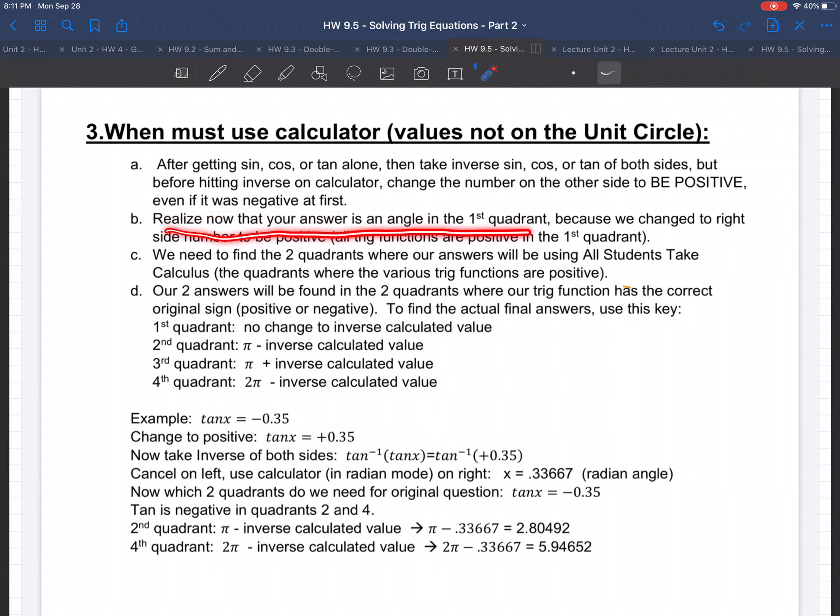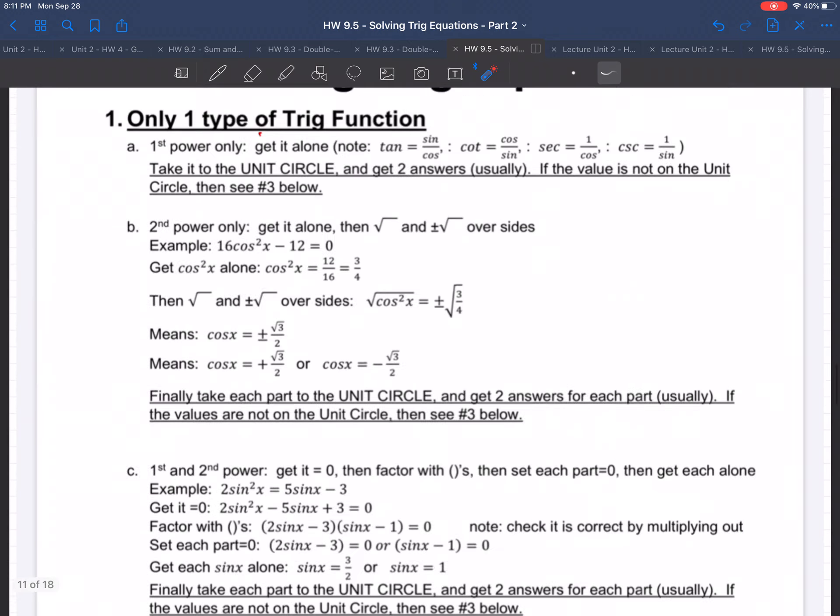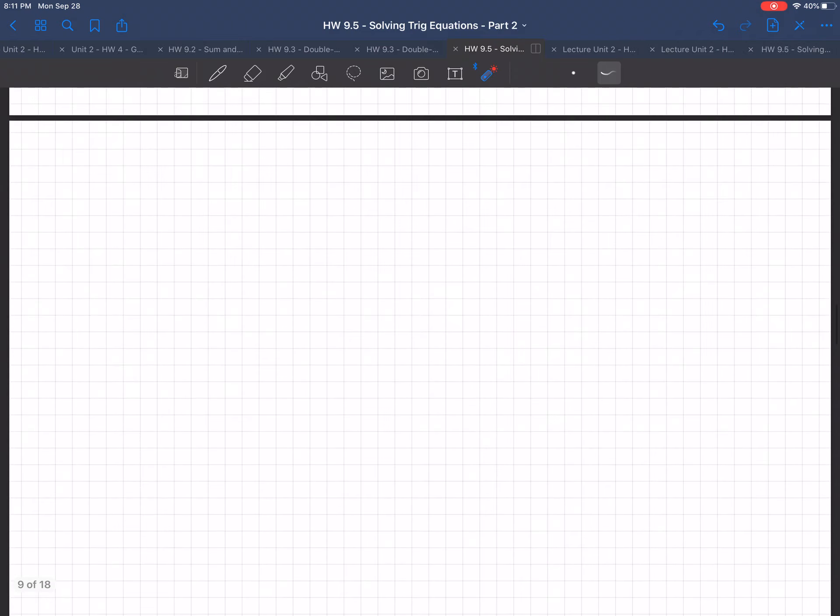Realize now that your answer is an angle in the first quadrant because we changed the right side to be positive. We need to find two quadrants where our answers will be using all students take calculus. And then here's how we find this. So I'll give an example on here. So let me show you exactly how that works.